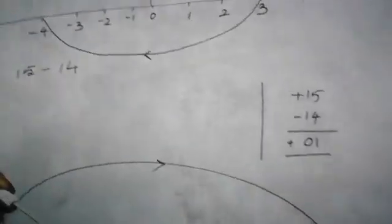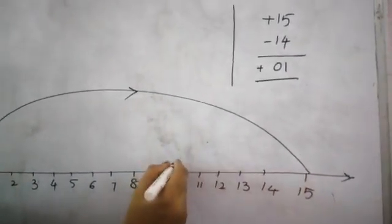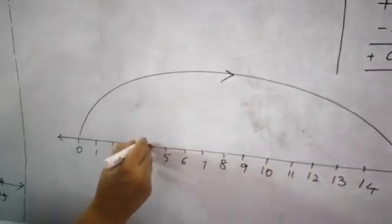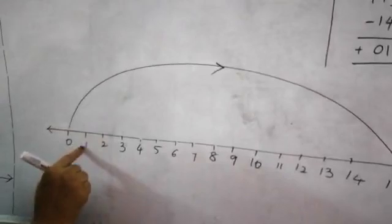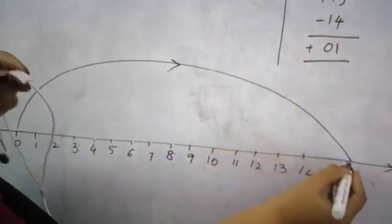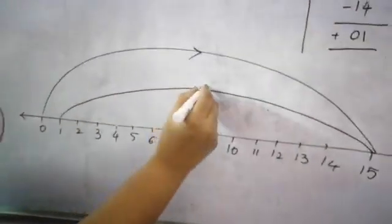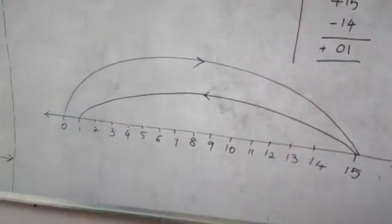Then 15 minus 14. When you are doing minus: minus 1, minus 2, minus 3, minus 4, minus 5, minus 6, minus 7, minus 8, minus 9, minus 10, minus 11, minus 12, minus 13, minus 14. Stopping at 1. So your answer is 1. So start from 15 and stop it at 1. Left arrow mark. I hope so it is clear to everyone.